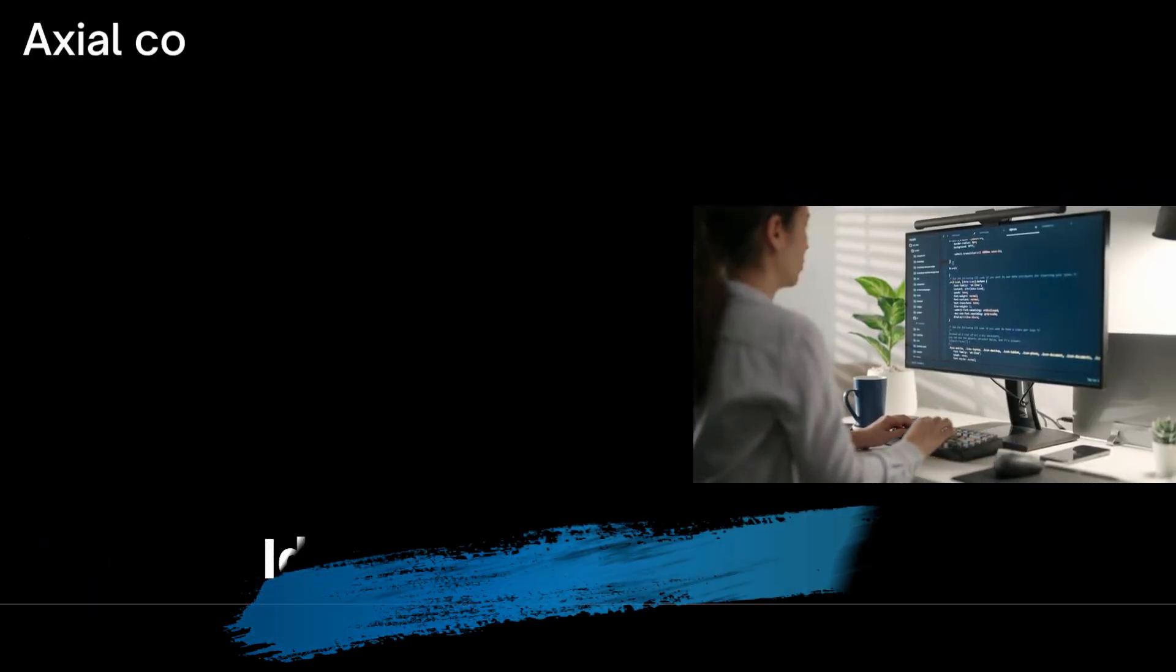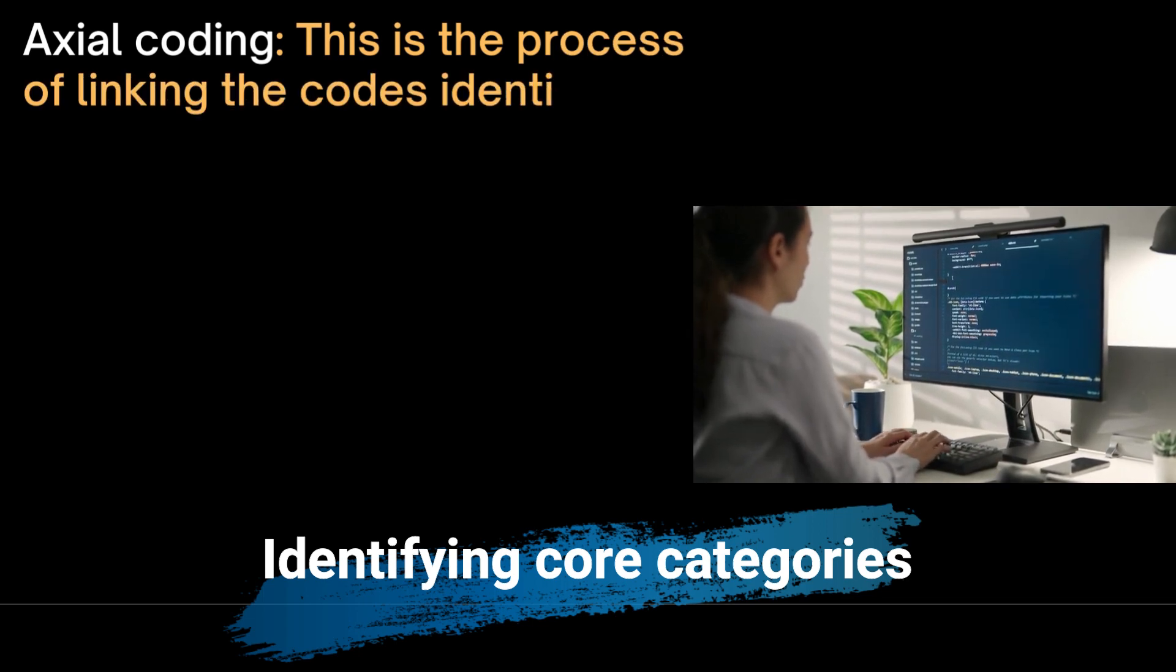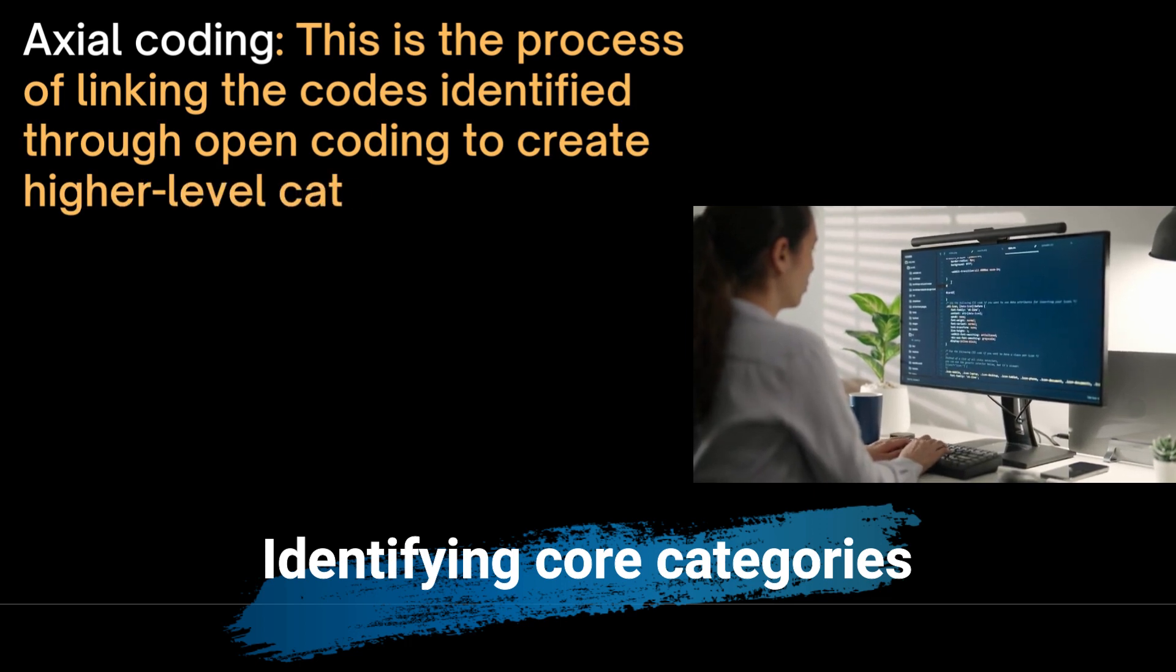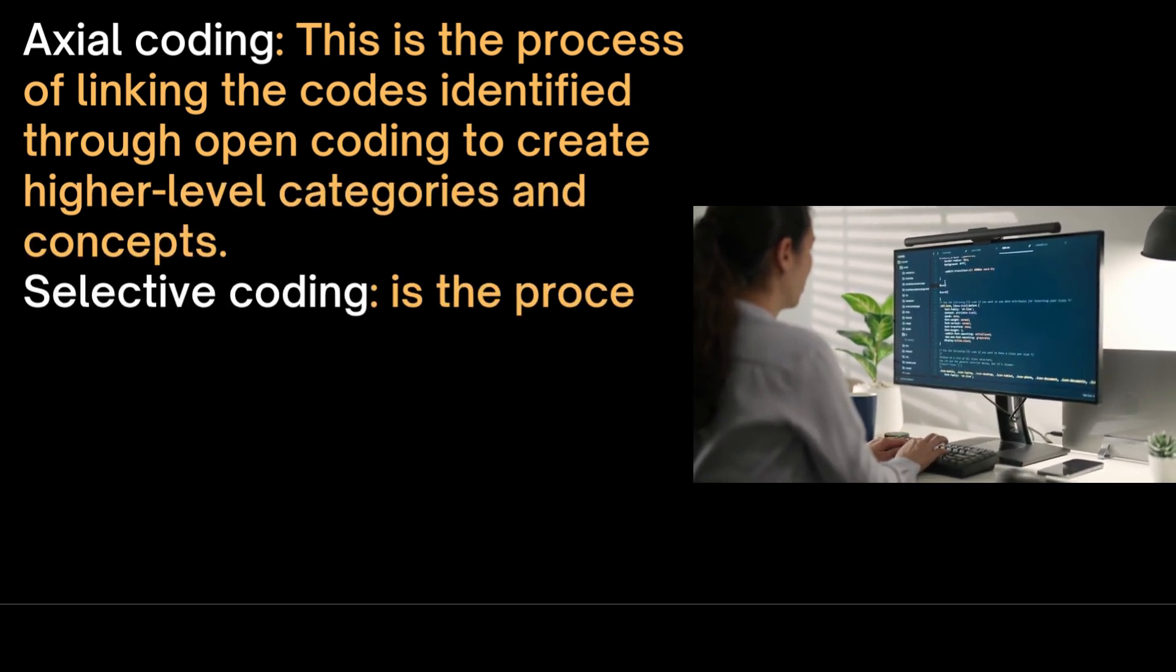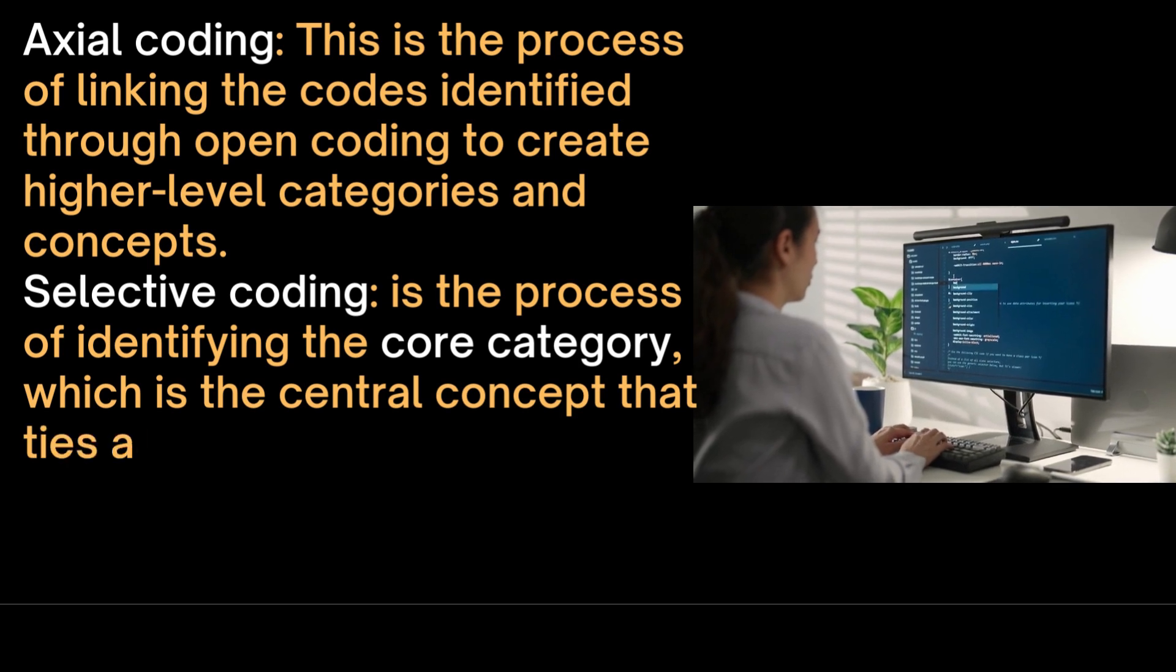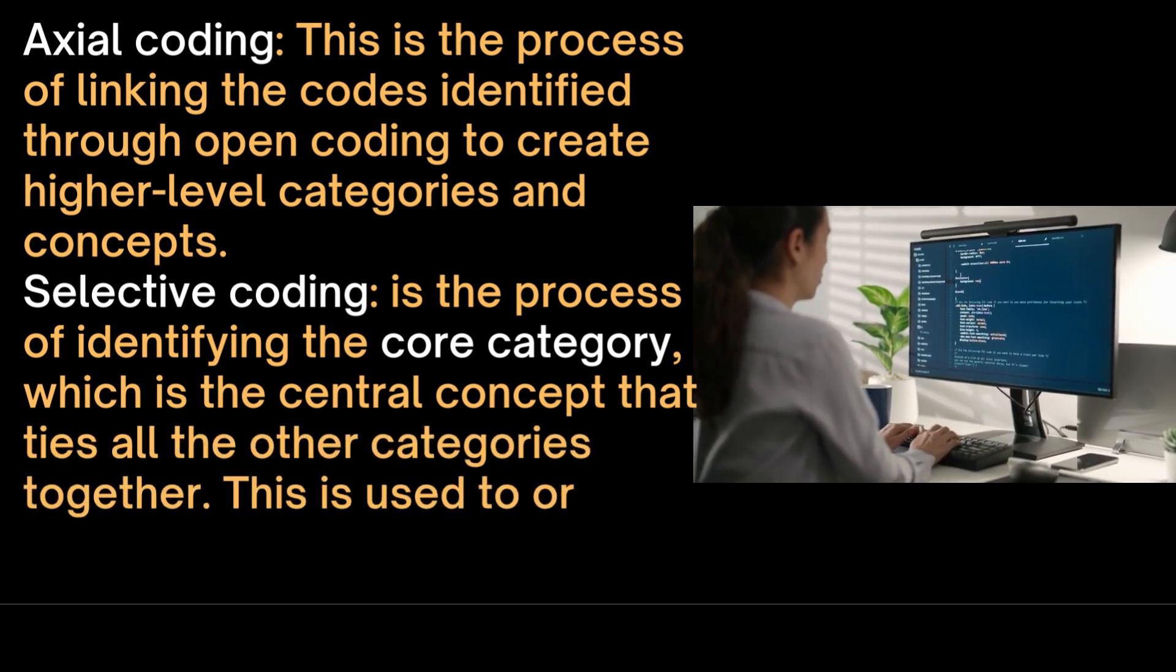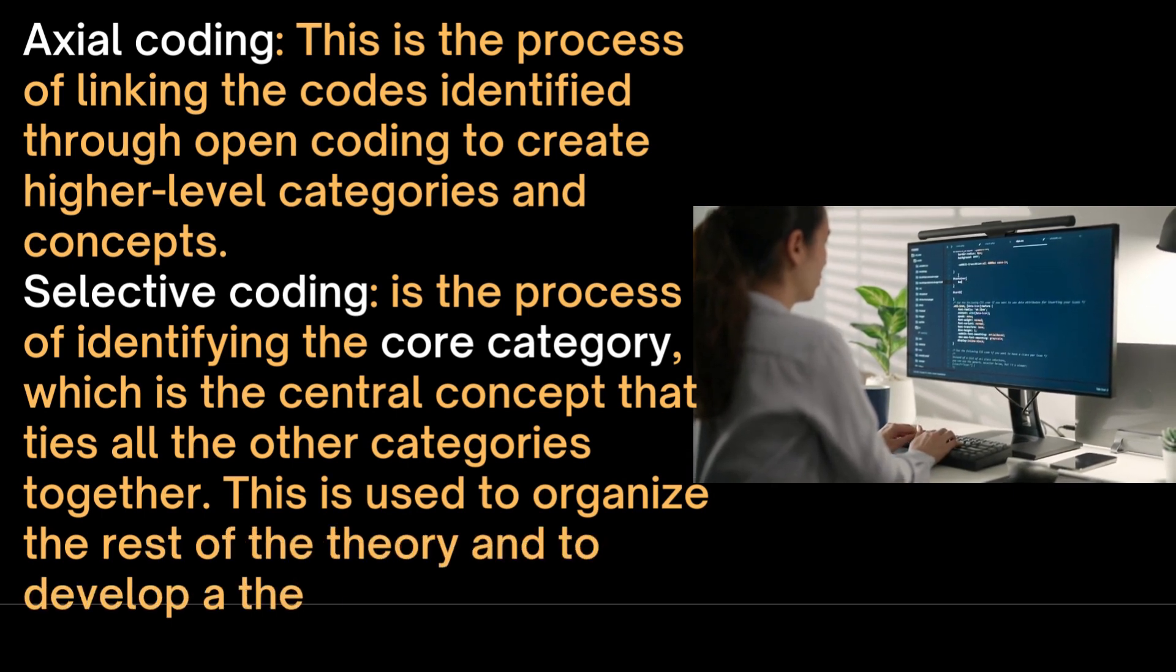This is followed by axial coding which is the process of linking the codes identified through the open coding process and it creates higher level categories and concepts. Selective coding is the process of identifying the core category which is the central concept that ties all the other categories together. This is used to organize the rest of the theory and to develop a theoretical framework.